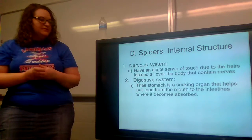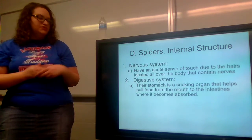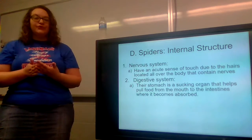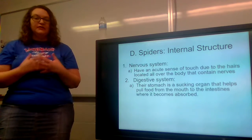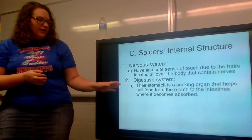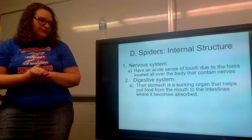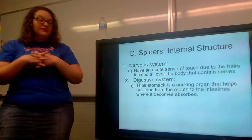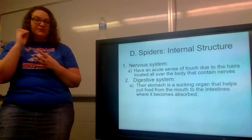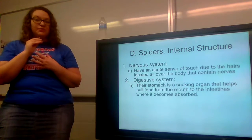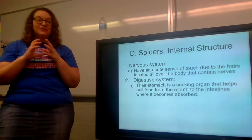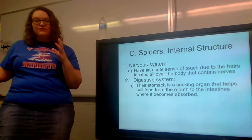The internal structure — the nervous system: spiders have an acute sense of touch due to hairs located all over the body that contain nerve endings. Each hair has several nerve endings in it, making them acutely aware of their surroundings. Their digestive system: their stomach is a sucking organ that helps pull food from the mouth to the intestines where it becomes absorbed. What happens is they kill their prey, release an enzyme that starts to break it down, and then their stomach acts almost like a vacuum and sucks the food down into itself.